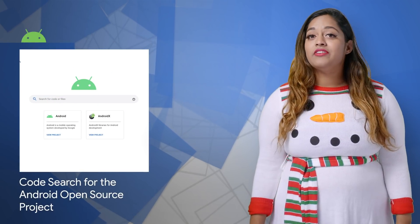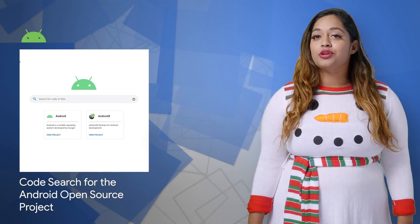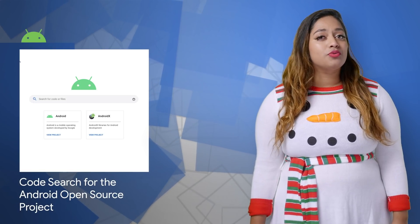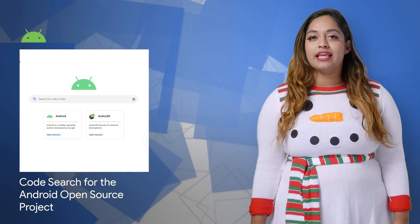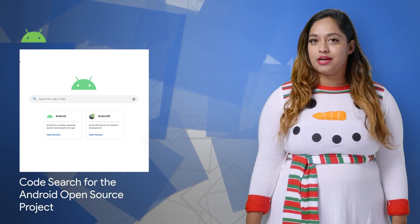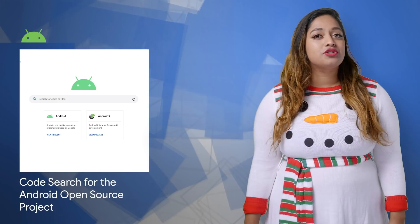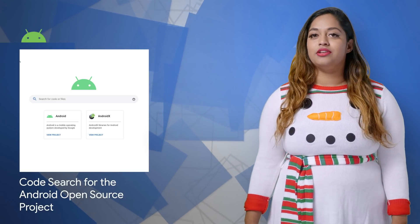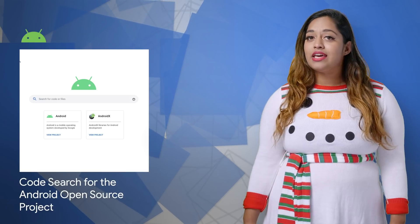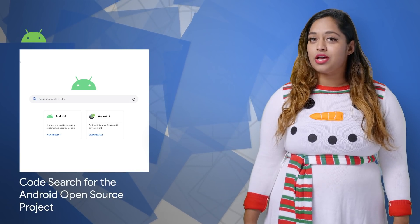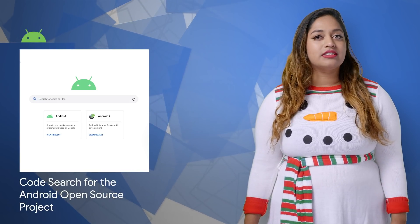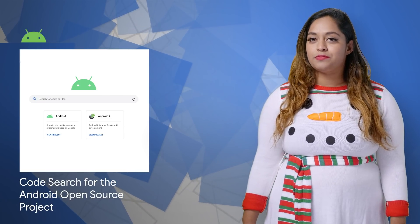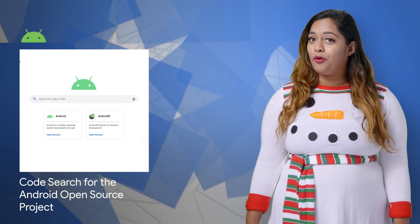The Android repository is made up of a collection of Git repositories, which are managed together using our repo tool. This means most tools can't see the source code the way that it's laid down when it's checked out on the system. We're now pleased to present a code search tool that presents a view of all the Android source code as you actually use it. You can now take advantage of features like viewing the source code, navigating cross-references across the entire code base, and switching between Android's open source branches. Check out the documentation to find out more.